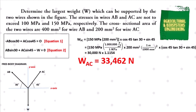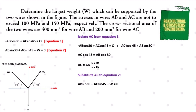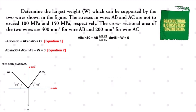Now we proceed in solving the weight carried by wire AB. We isolate AC from equation 1: AC cosine 45 equals AB cosine 30, so AC equals AB cosine 30 all over cosine 45. Substituting into equation 2: AB sine 30 plus AB cosine 30 all over cosine 45, multiplied by sine 45, minus W equals 0. Transposing gives W equals AB sine 30 plus AB cosine 30 all over cosine 45, multiplied by sine 45.